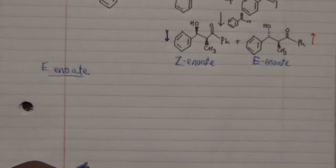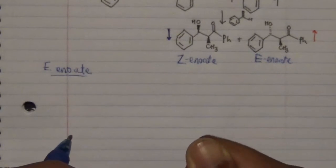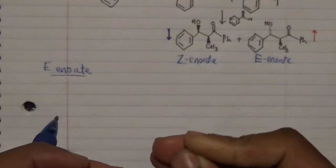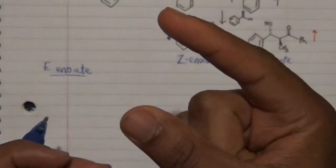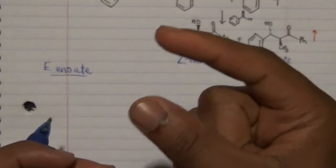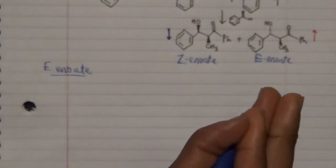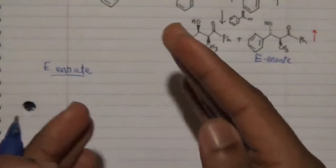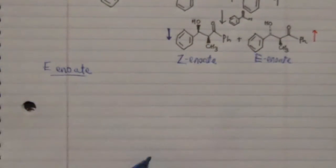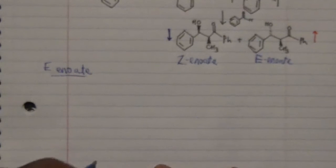For the E-enolate transition state, we have two forms: the favored one and the unfavored one. The disfavored one is mostly due to steric hindrance between the two phenyl groups. By switching the phenyl groups we are able to arrive at a more stable transition state. Note that both the E-enolate and Z-enolate generate a chair conformation, which is quite stable in terms of ring arrangement at the transition state region, making it more thermodynamically stable.